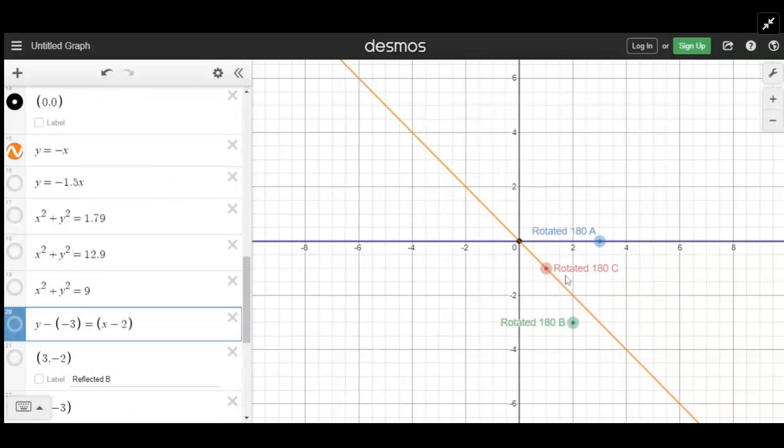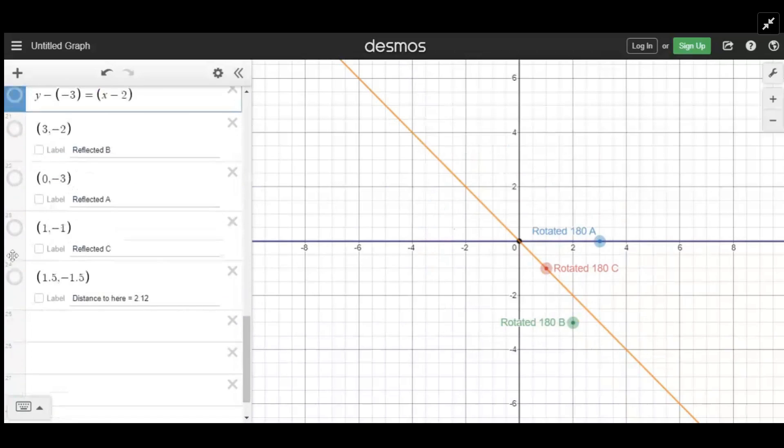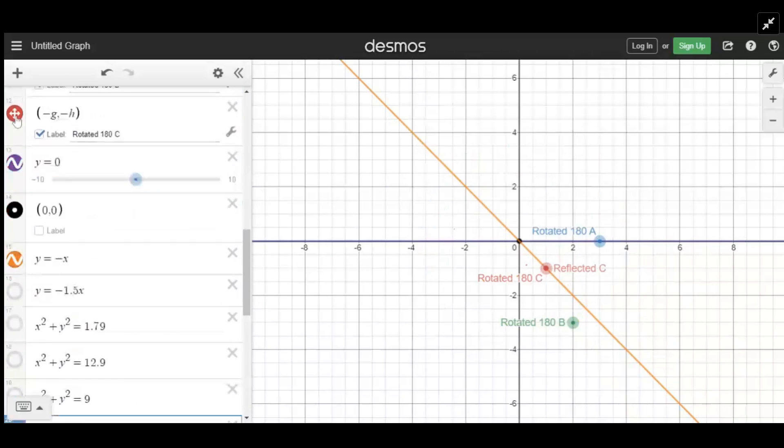C is on the line of rotation, so it doesn't change. Already we know that the reflected C is in the exact same spot. I can erase the rotated C because it's sitting on the line of rotation.